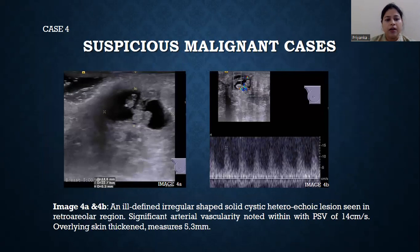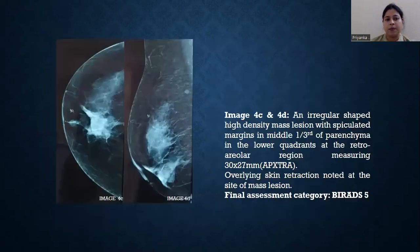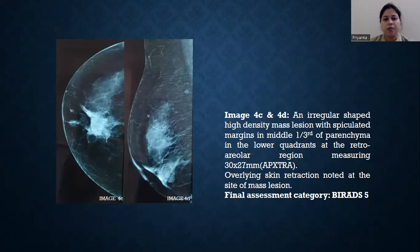Case number 4: an ill-defined, irregular-shaped, solid-cystic, heteroechoic lesion is seen in the retroareolar region, with significant vascularity on limited color Doppler and overlying skin thickening. On mammogram, this lesion was seen as an irregular-shaped, high-density mass lesion with spiculated margin and overlying skin retraction. It was given BI-RADS 5.